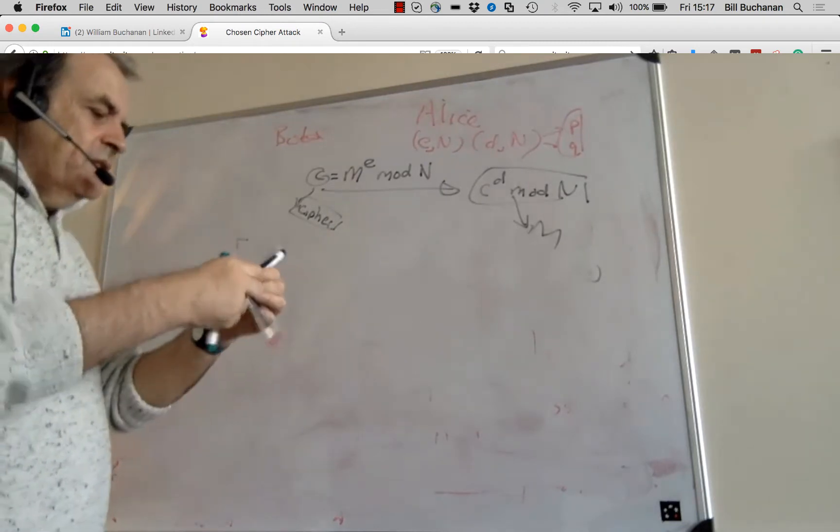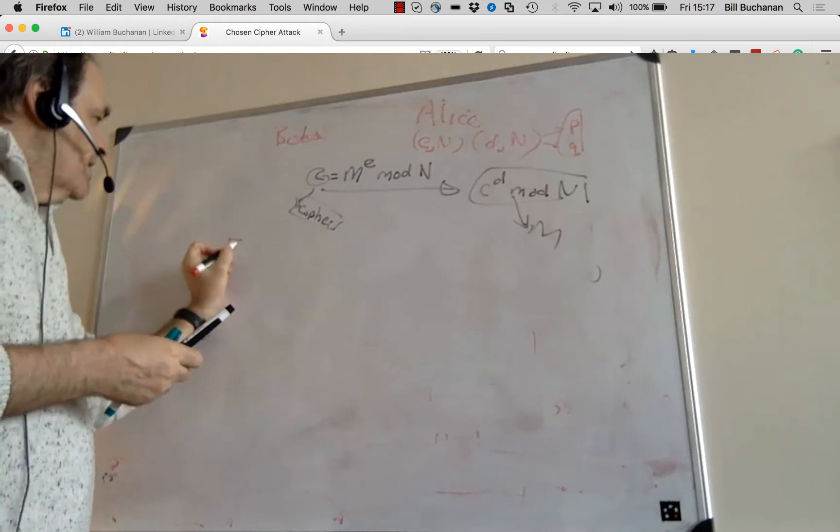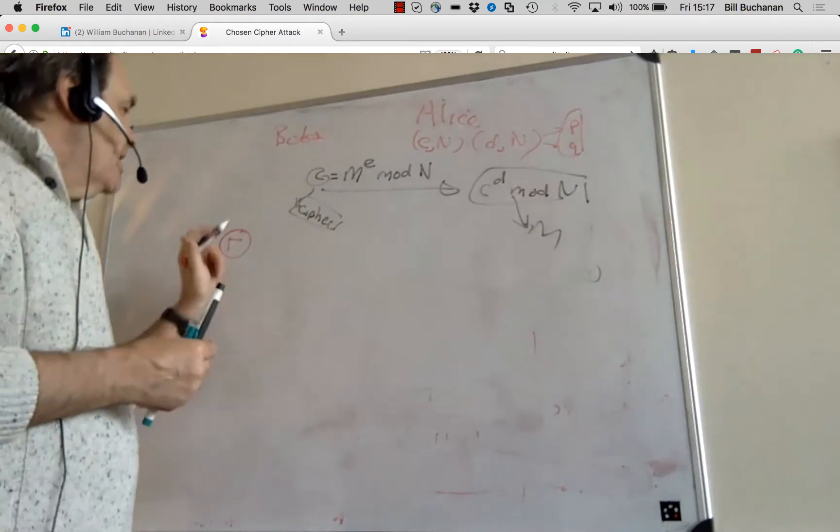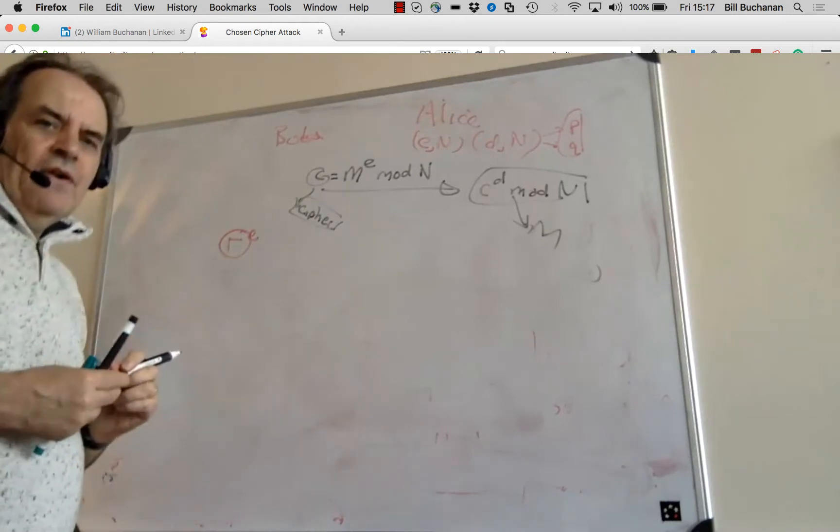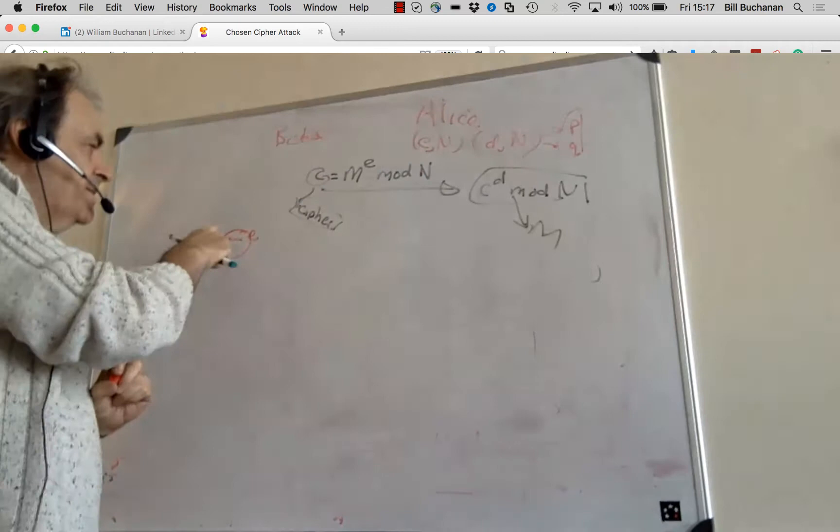So the next thing he does is he takes a random number, and then raises it to the power of E. So he knows E, so he takes a random number and raises it to the power.